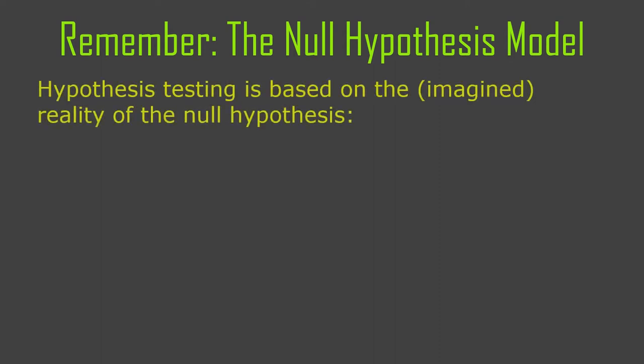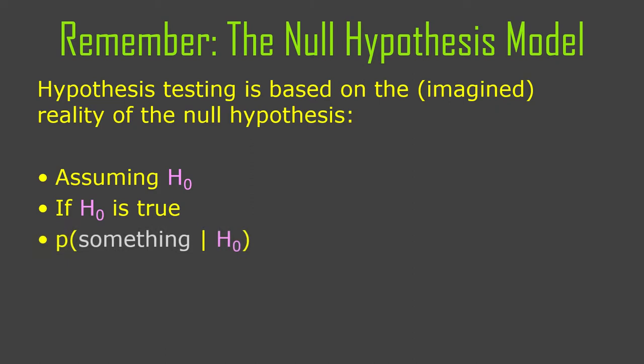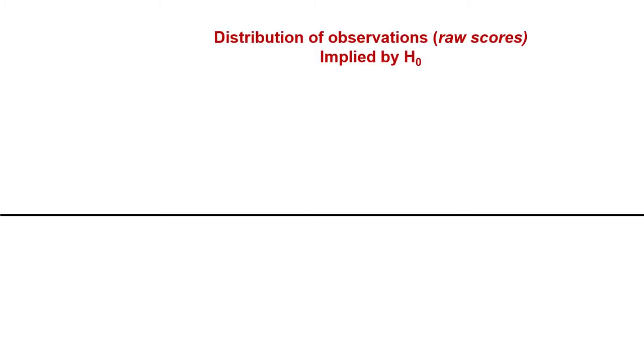The null hypothesis model — just to recap: hypothesis testing is based on assuming the null. Everything is about the null being true. We start with the null; the null model is what we specify. We then place our observed data in that null model to see how likely our observed data would be. The more you think about it, the stranger it gets, but it gets comfortable — and then you start to wonder why we do this, joining the statisticians who critique it.